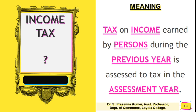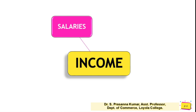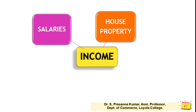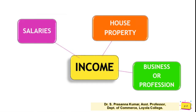According to the Income Tax Act, income earned by a person is categorized into five heads. The first is salary — a reward for work done, paid by an employer to an employee. The second is income from house property — if you let out your property, the tenant pays rent, and that rental income is called income from house property.